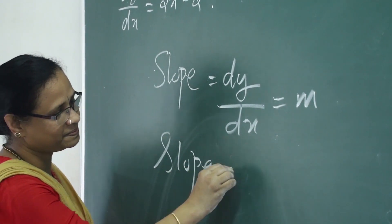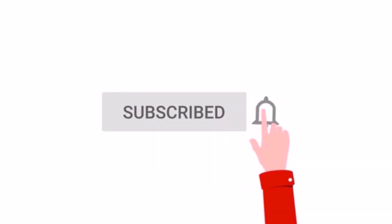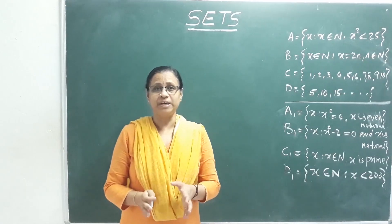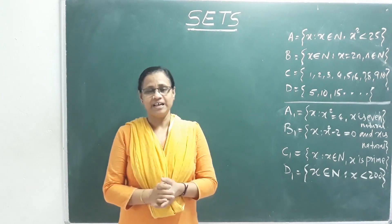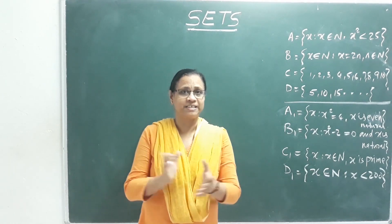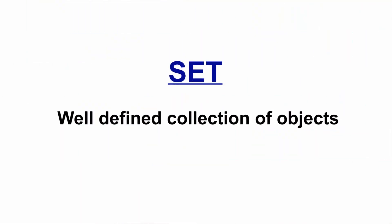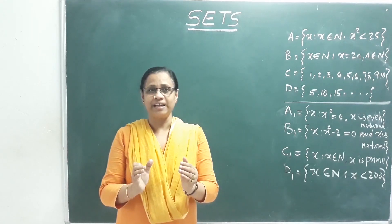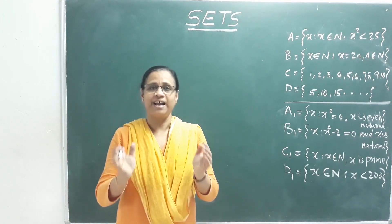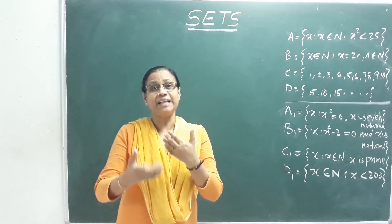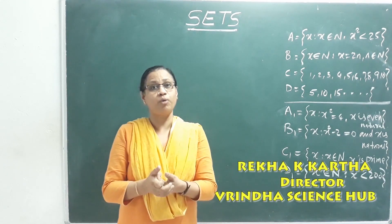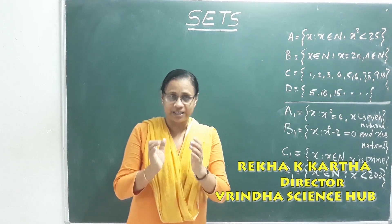Mathematics is too easy a subject. The first chapter is Sets — it's a very simple chapter. What is a Set? A Set is a well-defined collection of objects. The collection of objects that are clearly defined is called a Set.